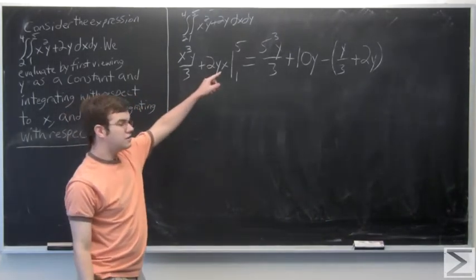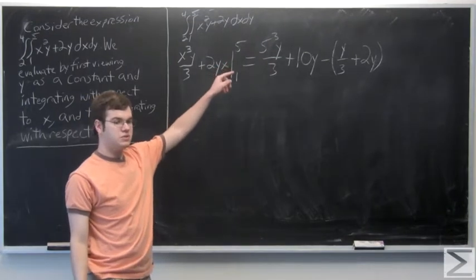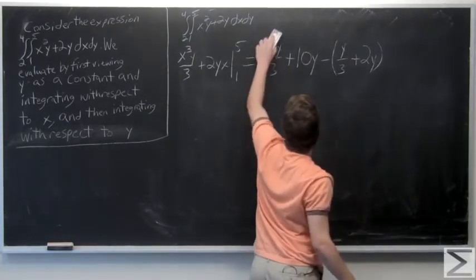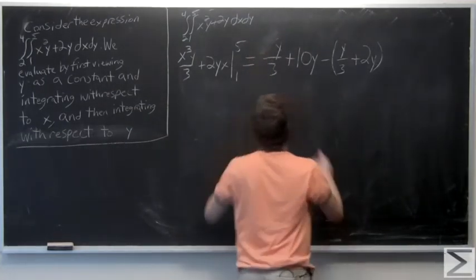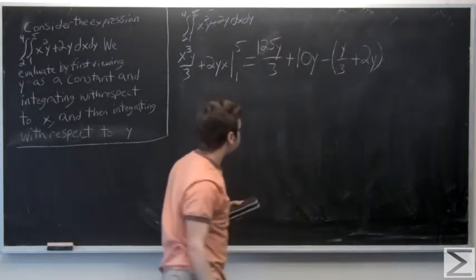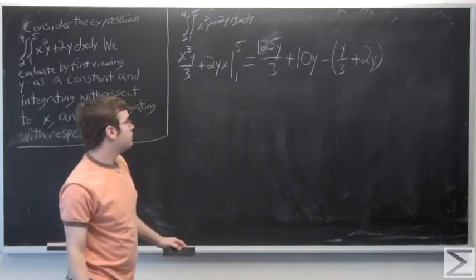So 5 to the third is the same as saying 125, 5 times 5 times 5.